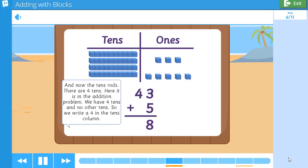And now the tens rods. There are 4 tens. Here it is in the addition problem. We have 4 tens and no other tens. So we write 4 in the tens column. We have 48 shells.